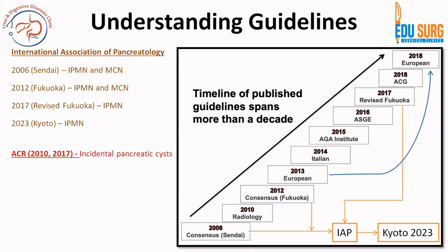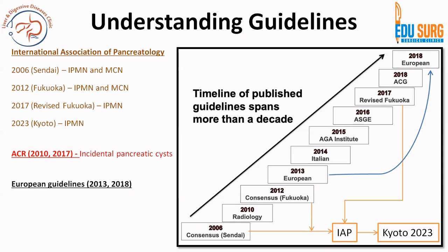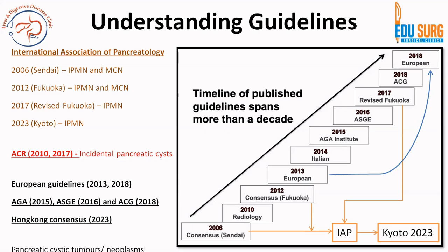The radiology societies published guidelines in 2010 with a revision in 2017 covering incidental pancreatic cysts — not a particular neoplasm. The European guidelines, AGA and American guidelines, as well as the Hong Kong consensus are for all pancreatic cystic neoplasms, not specific to IPMN or MCN. Understanding this overview is very important when citing a guideline for a particular type of pancreatic cyst.